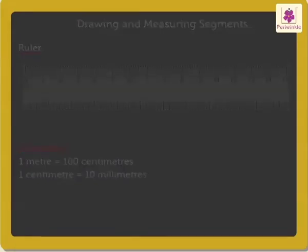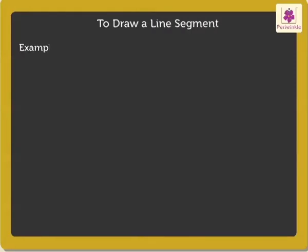Now, let us see how to draw a line segment. Draw a segment MN of 4.8 centimeters. This can be done in three steps.